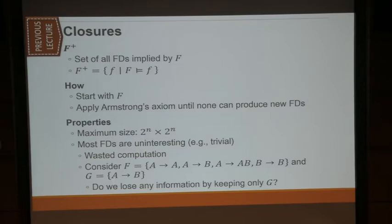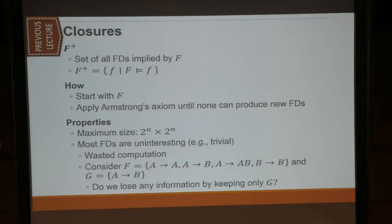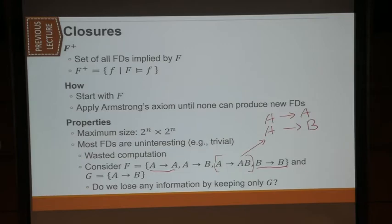What we typically want to do is find a minimal set, because keeping track of all the functional dependencies is not really a good way to keep track of things — especially when most are trivial. You can decompose into the trivial part and the completely non-trivial part. Typically what you want is everything that is completely non-trivial, and it still has the same information as your initial F. You can always arrive at that using the attribute closure.